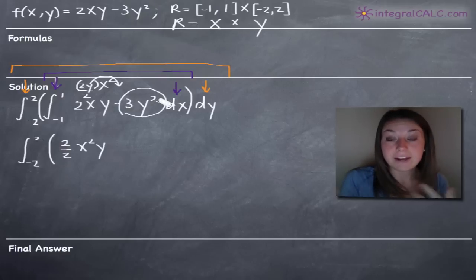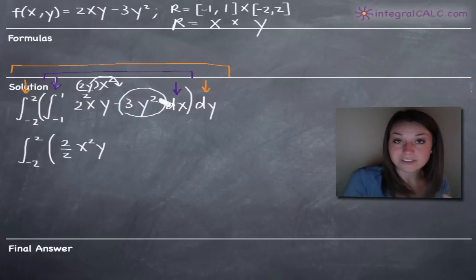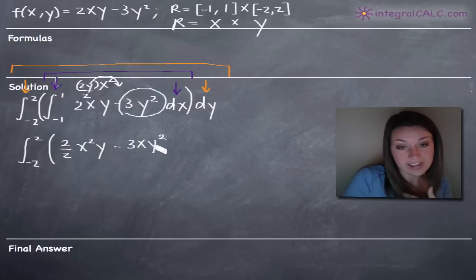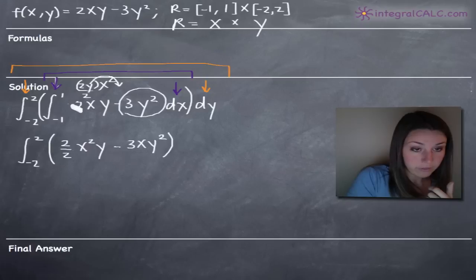If we had minus 4, the integral of that would be minus 4x. We would just tack on the x variable. Similarly, in this case, we're just going to add an x variable to this term and we'll get minus 3xy squared. Then we're going to evaluate this on the range 1 to negative 1, and we've got dy out on the end.